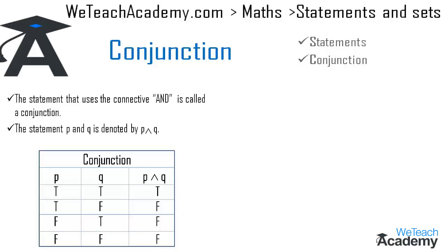Let me explain this concept with an example. We have the statement: '20 ÷ 10 = 2 and 20 × 10 = 200.' Both statements are true, so the truth value for the conjunction of both statements would also be true.